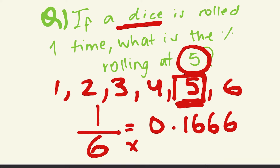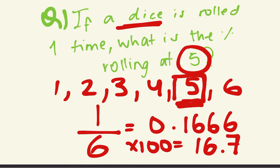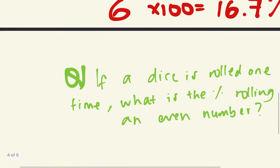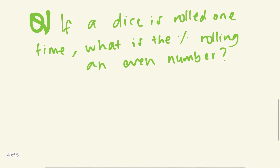To convert a decimal to a percent, you multiply by 100. So 0.1666 multiplied by 100 gives 16. Because six is greater than five, we round up to seven, so the answer is 16.7 percent.